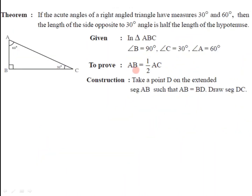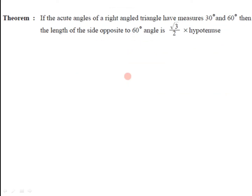And this is the first part we have to prove: AB is equal to half of AC. Now to get the second part of this theorem, we have the statement: if acute angles of a right angle triangle have measures 30 degree and 60 degree, then the length of the side opposite to 60 degree is root 3 by 2 times the hypotenuse.